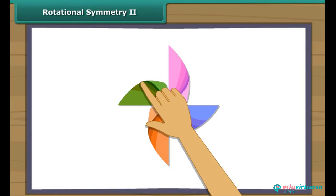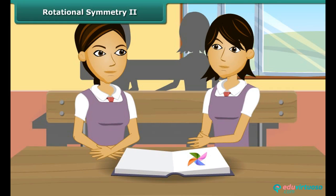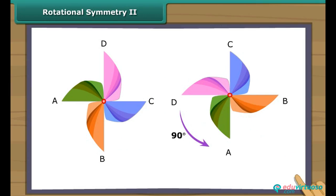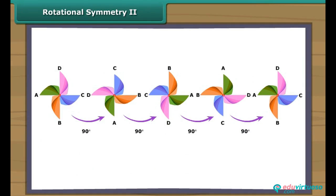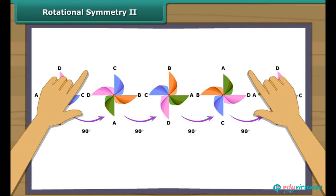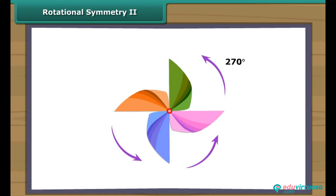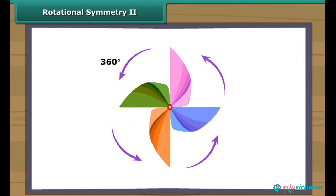This is a paper windmill. It has a rotational symmetry. If you rotate it by 90 degrees about the fixed point, the windmill will look exactly the same. In a full turn, there are four positions — on rotation through the angles 90 degrees, 180 degrees, 270 degrees, and 360 degrees — when the windmill looks exactly the same. Therefore, we can say that it has a rotational symmetry of order 4.